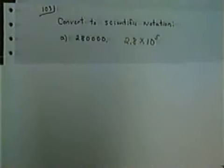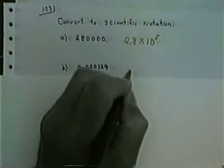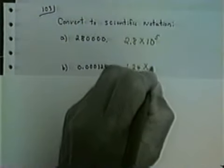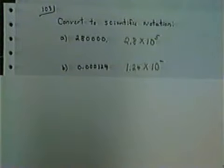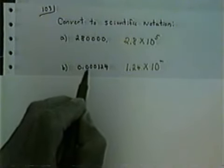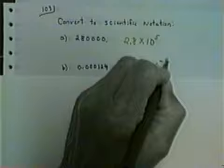Let's look at another example: 0.000124. This is a small number — its absolute value is less than 1. Small numbers have negative exponents, so it's going to be 1.24 times 10 to some negative power. I had to shift the decimal one, two, three, four places, so the exponent would be negative 4: 1.24 times 10 to the negative 4.